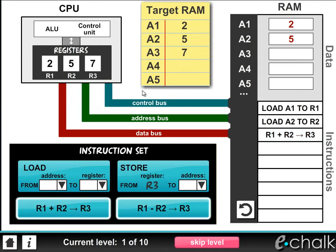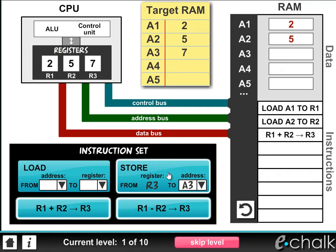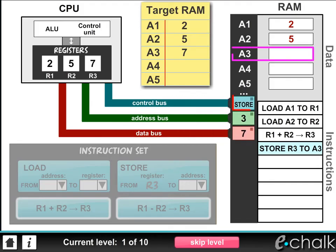The last command we need to issue to complete the challenge is the store command. The store command allows us to store the contents of register 3 into a memory address in RAM. For our problem, we need to select address 3. Now we've made our instruction, let's drop it onto the instruction stack. So this time, the information on the buses is saying to store at address 3 the data 7.